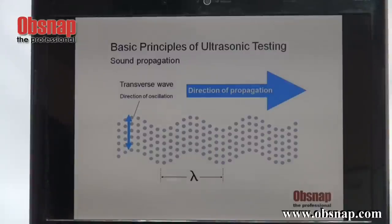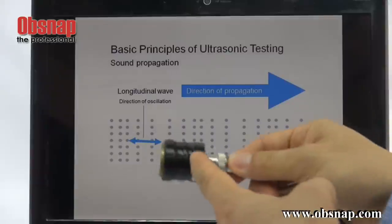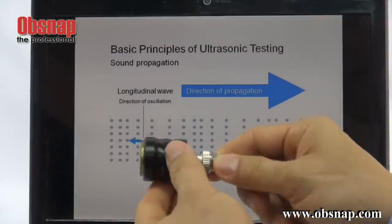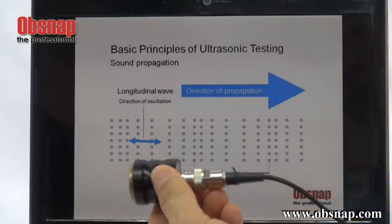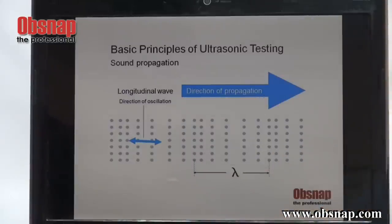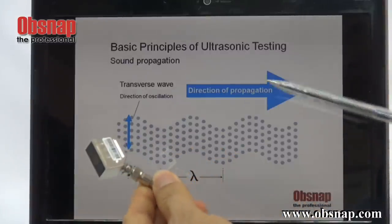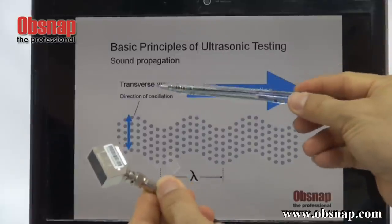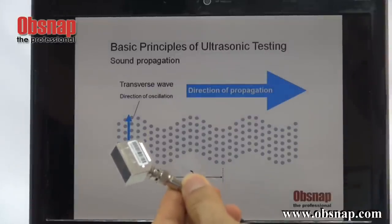What is actually important is that when we use a straight probe, we need to set the frequency to a longitudinal wave — only then can we get an accurate result. And when we are using an angle probe, we need to use transverse wave. Otherwise, the reading is going to be inaccurate.